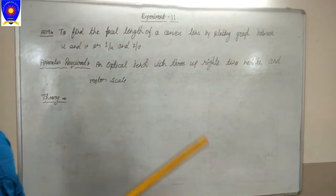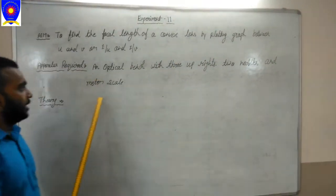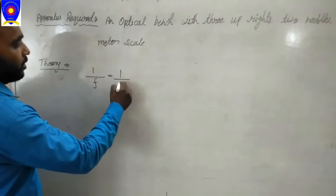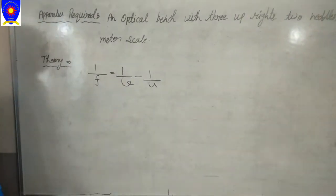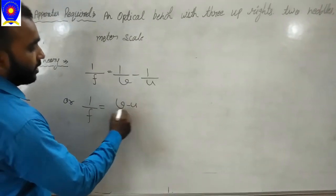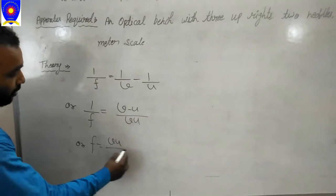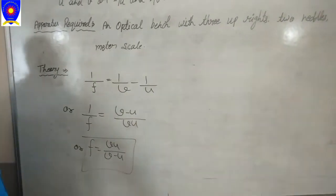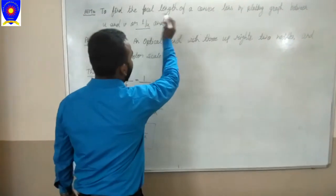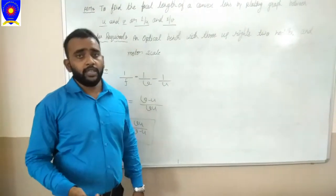The apparatus required for the practical are an optical lens with 3 uprights, 2 needles, and a meter scale. According to the theory of lens, we know that 1 upon F is equal to 1 upon V minus 1 upon U. After solving this formula you will get F is equal to VU upon V minus U. With this formula we can find the focal length of a convex lens and we can also plot a graph between 1 upon V and 1 upon U, or between U and V, and find the focal length with the help of the graph.